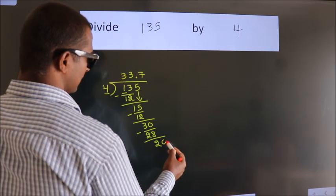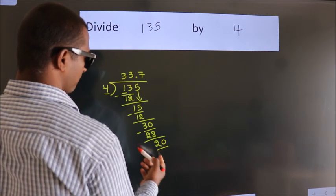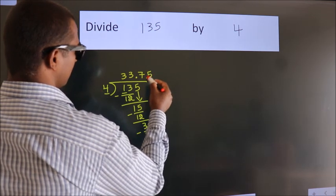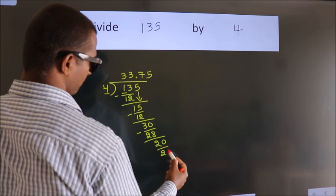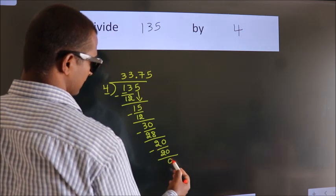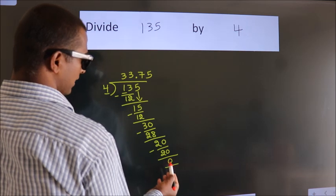So, directly take 0. So, 20. When do we get 20 in the 4 table? 4 times 5 is 20. Now we subtract. We get 0. We got remainder 0.